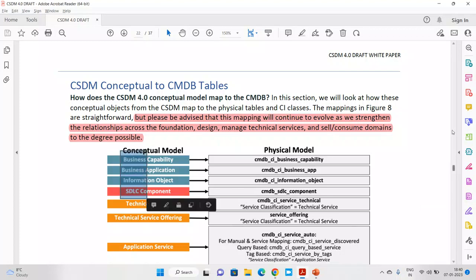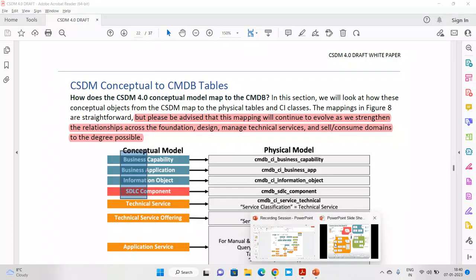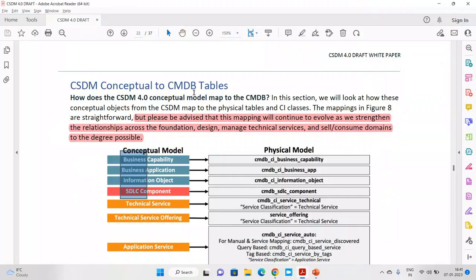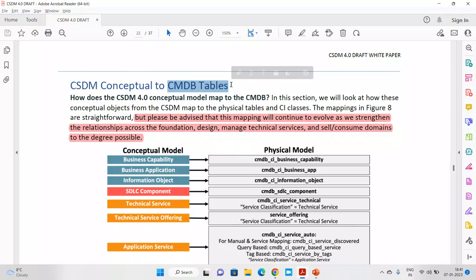This is where architects and developers need to pay attention — understanding which data goes to which particular table. In this section, we look at how these conceptual objects map to tables. This is the conceptual model — we have already discussed why it is called conceptual, because it is still in an evolving phase. You will find out in upcoming videos how to implement CSDM in your organization. But first, we need to understand how this concept relates to CMDB, because ultimately all these tables come from the CMDB CI.